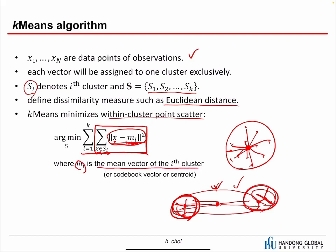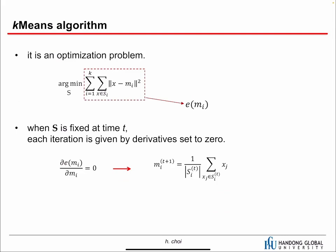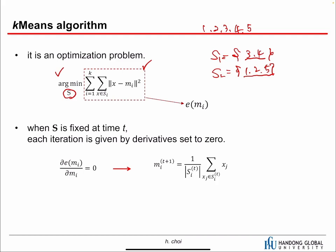M sub i is the mean vector of the i-th cluster. Depending on the research field, some prefer the term 'codebook', some prefer 'centroid', or simply 'mean vector' works fine. To minimize the objective equation, we have to reorganize the clusters. S represents the assignment — when we have 5 samples, S1 might be {3, 4} and S2 might be {1, 2, 5}, giving us 2 clusters. We have to check all different kinds of assignments to minimize this term.